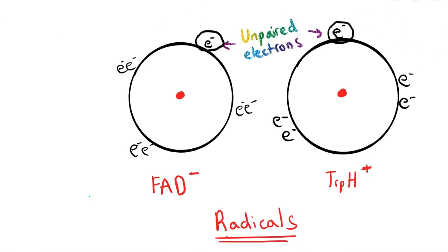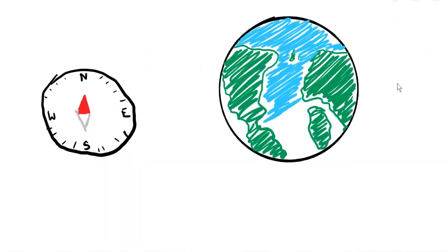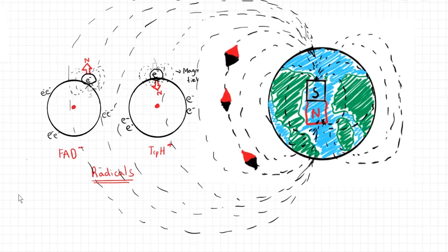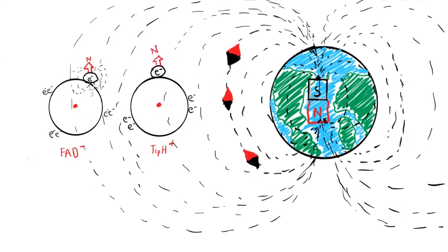These unpaired electrons now have weak magnetic fields around them because there's nothing to cancel them out. And just like a compass needle is a tiny bar magnet and aligns with the Earth's magnetic field, they too now align with the geomagnetic field and their spins become parallel.